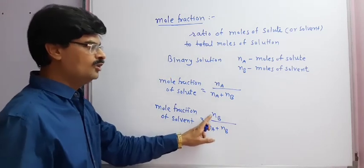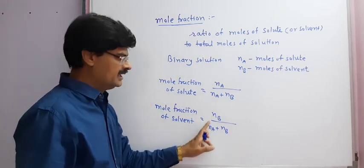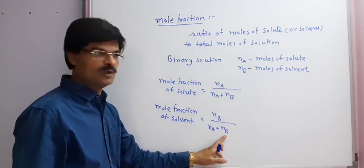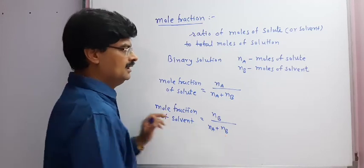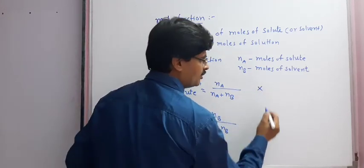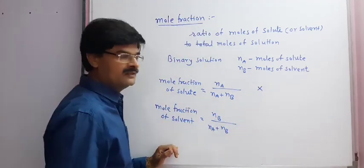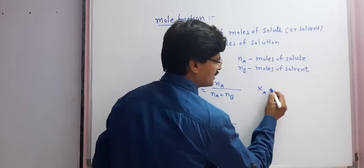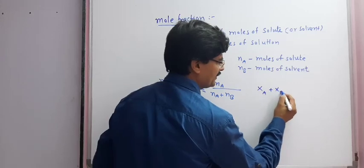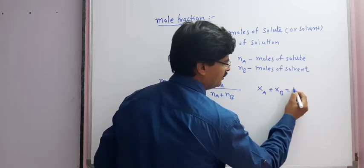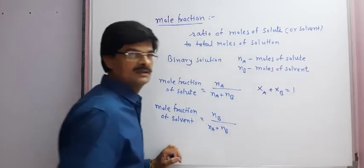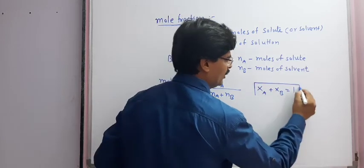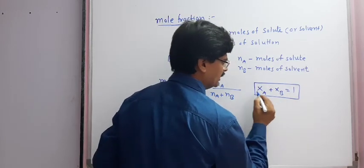Another thing we have to remember is that total mole fraction is always 1. So XA plus XB is equal to 1.